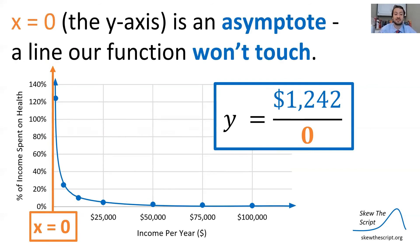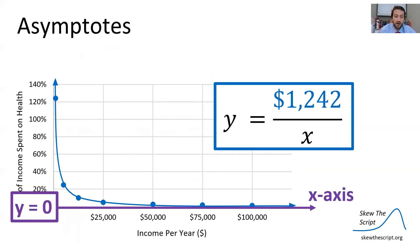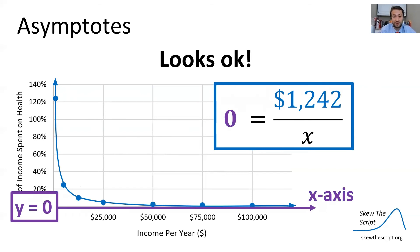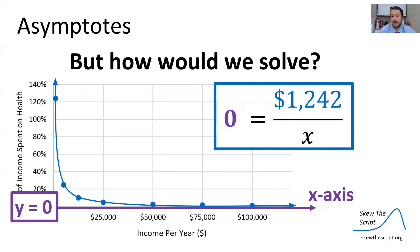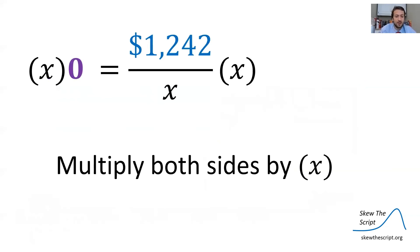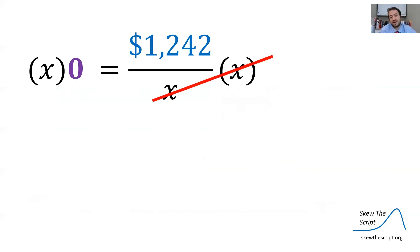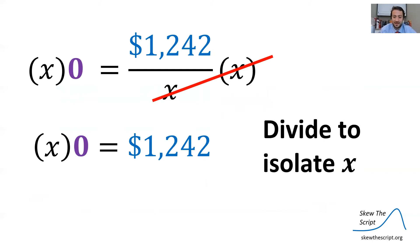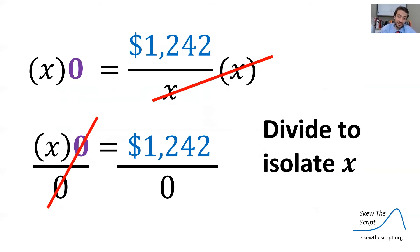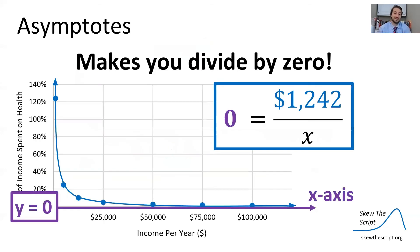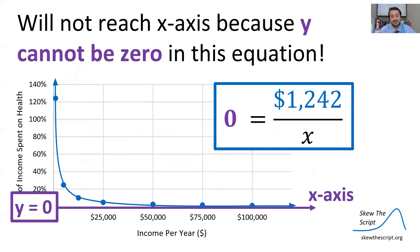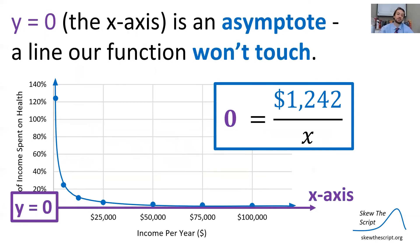So x = 0 is an asymptote — a line that our function will approach but never touch. Similarly, let's look at y = 0 on the x-axis. If we set y = 0 in our equation: 0 = 1242/x. Multiplying both sides by x gives x × 0 = 1242, and dividing both sides by zero — we can't divide by zero. So y = 0 gives us an asymptote. We cannot reach the x-axis because y cannot be zero in this equation. The x-axis is an asymptote — a line our function will approach but will not touch.